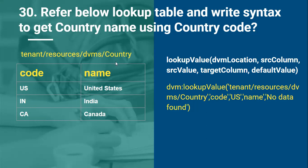Based on this table, the syntax would be: lookupValue('tenant/resources/dvms/country', 'code', src_value, 'name', default_value). The DVM location is the table path. Source column is 'code' since we are sending the country code as input — for example, 'US'. Target column is 'name' since we expect 'United States' as output. The default value is returned when a value like 'Australia' is not configured in the table, in which case a no-data-found response comes back.